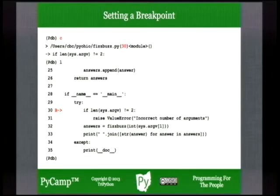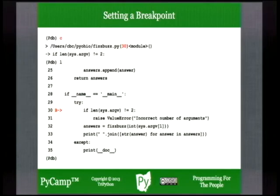The 'c' debugger command means: instead of single-stepping, continue execution until the next breakpoint. The debugger will stop at line 30. It will show you the statement that would be executed next if you were single-stepping. If you do a listing, you will see the breakpoint and the instruction pointer at the breakpoint.